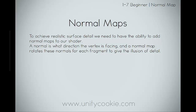A normal is what direction the vertex is facing, and a normal map rotates these normals for each fragment to give the illusion of detail. The key word there is 'rotates' — we are using the normal map to actually rotate the vectors, not overwrite them. However, you can use what's called an object space normal map, which will overwrite them. For now, we are just going to be working with tangent space, which is the most common.